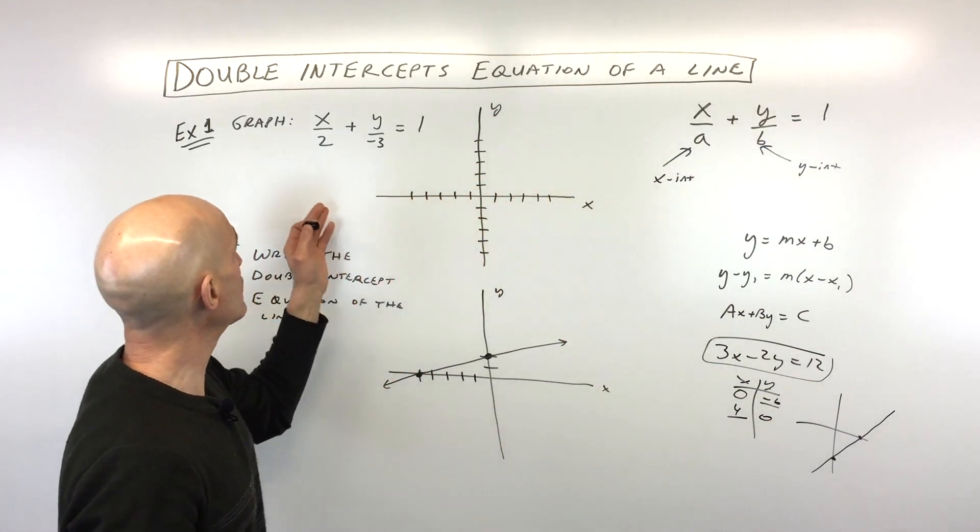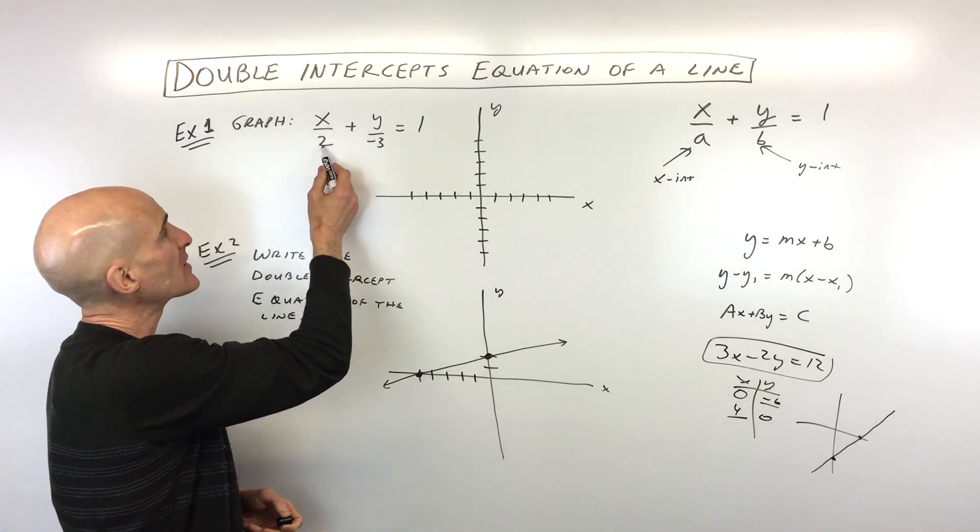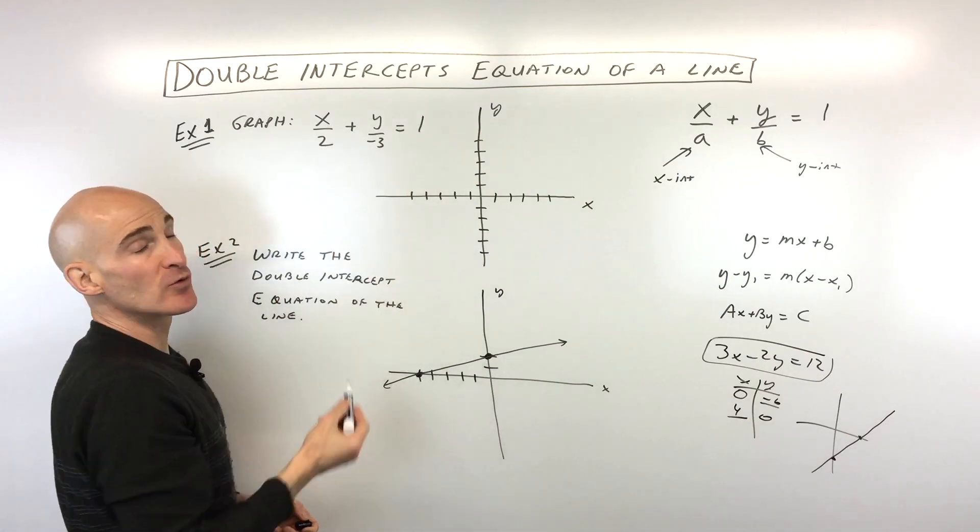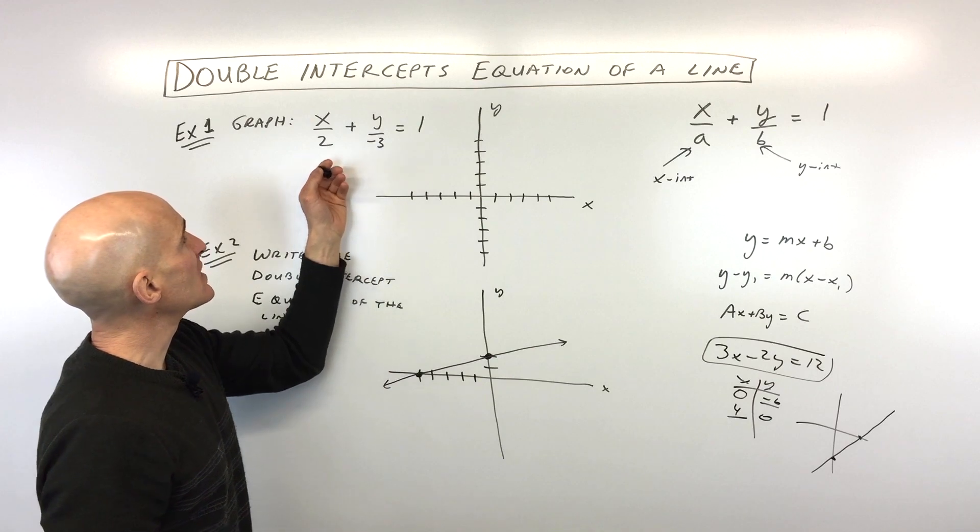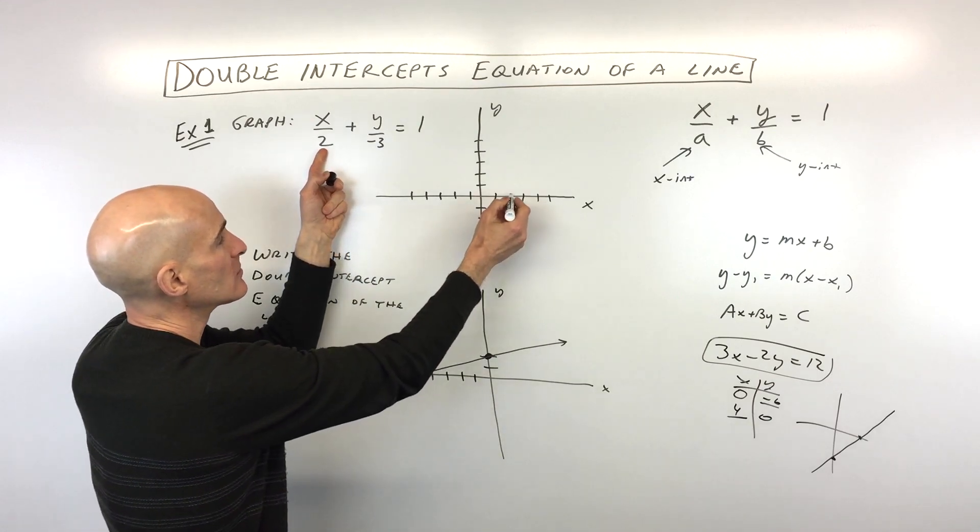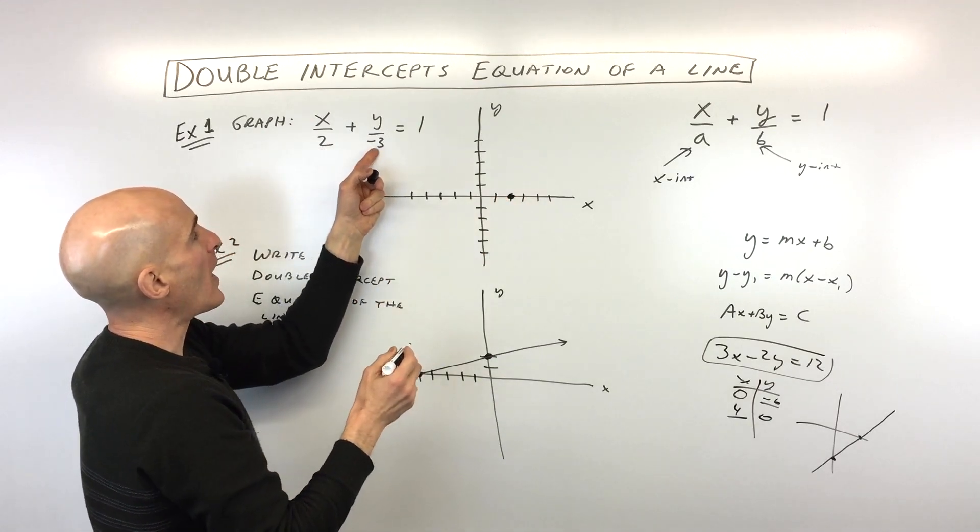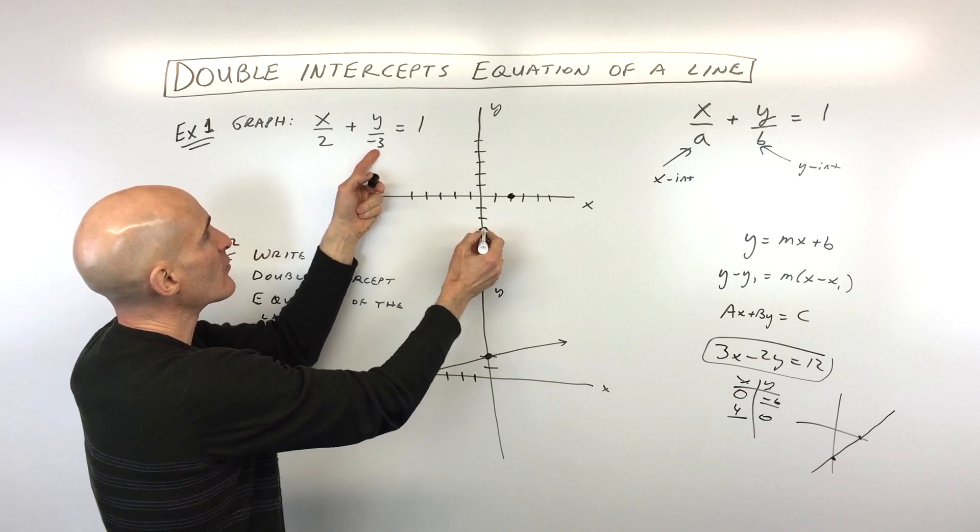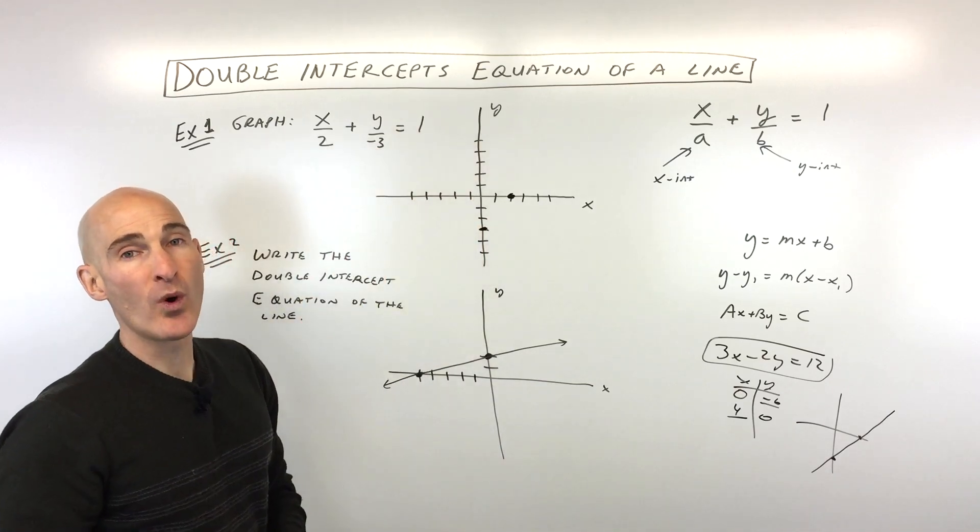Now, we're going to look at a couple examples. So the first one, see how it says graph x over 2 plus y over negative 3 equals 1? So what we're going to do is we're going to say, okay, our x-intercept is 2 and our y-intercept is negative 3. Now, remember, this equation always has to be equal to 1.